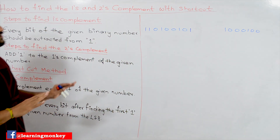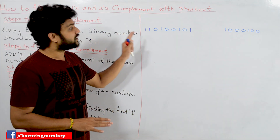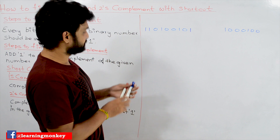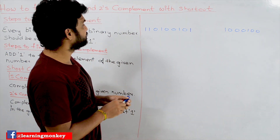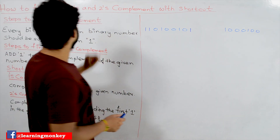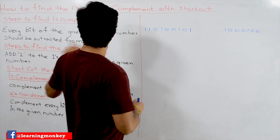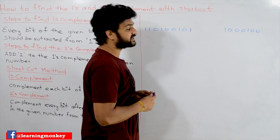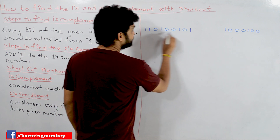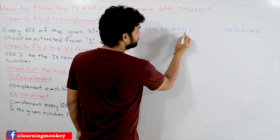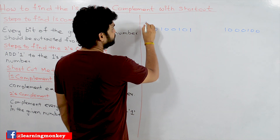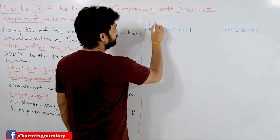Let's try to find the ones complement and twos complement on two examples. To find the ones complement, every bit of the given binary number should be subtracted from one.